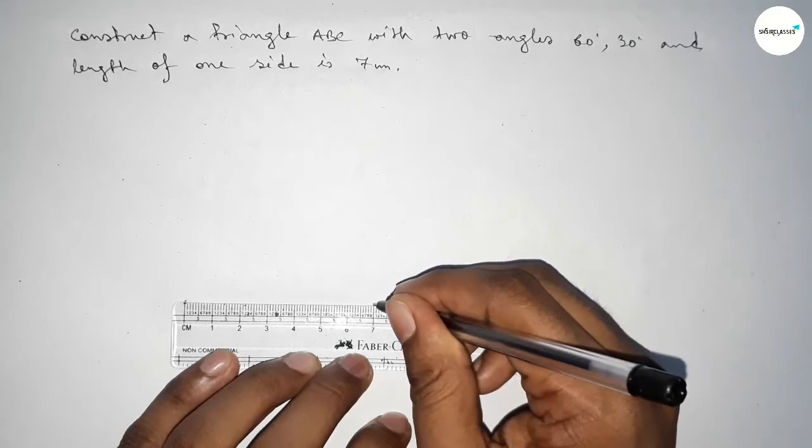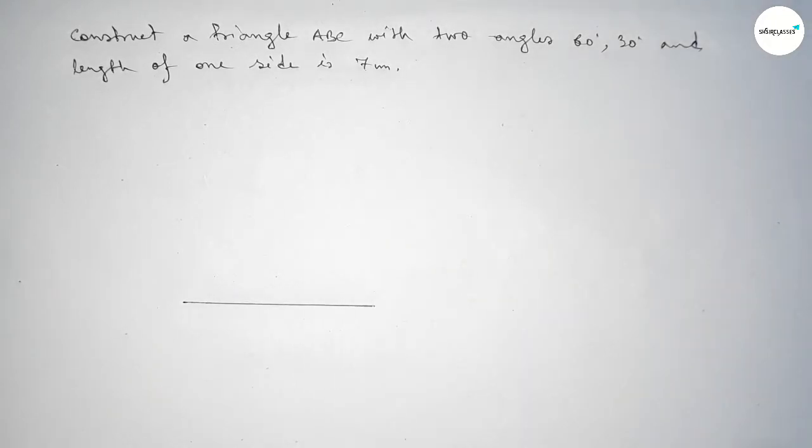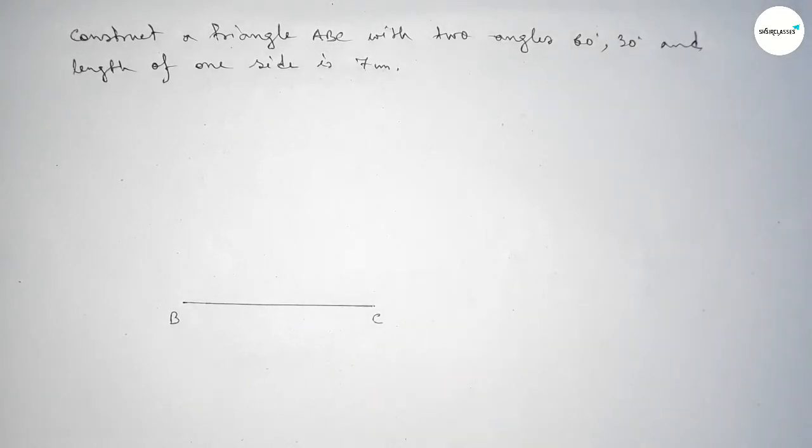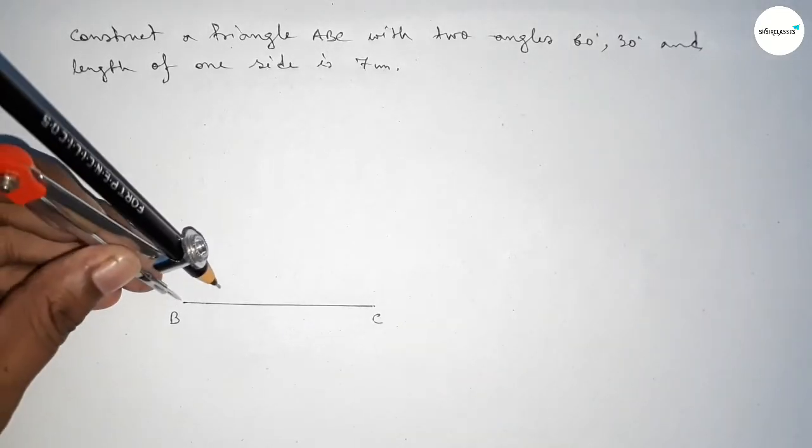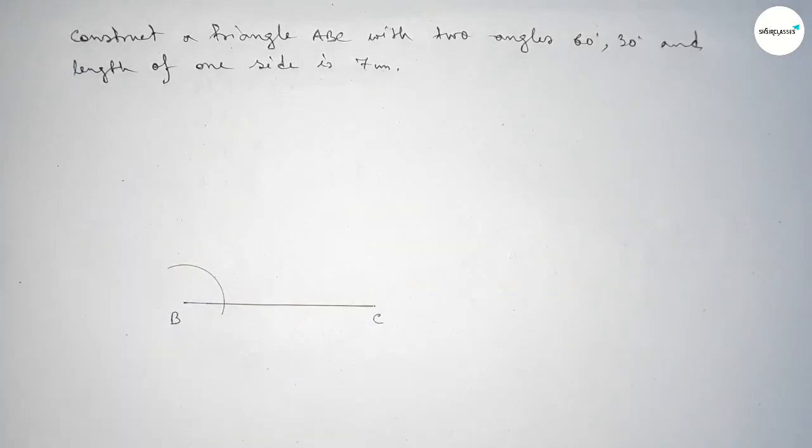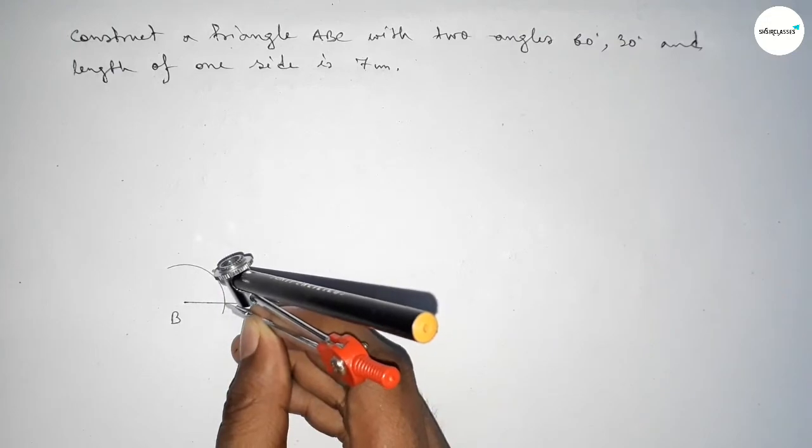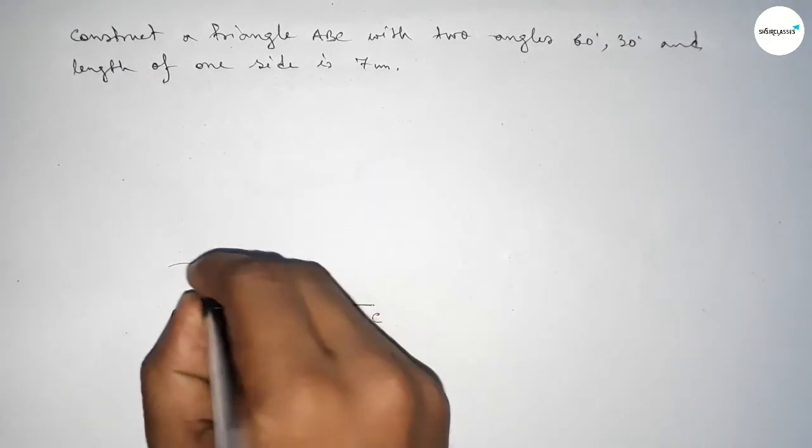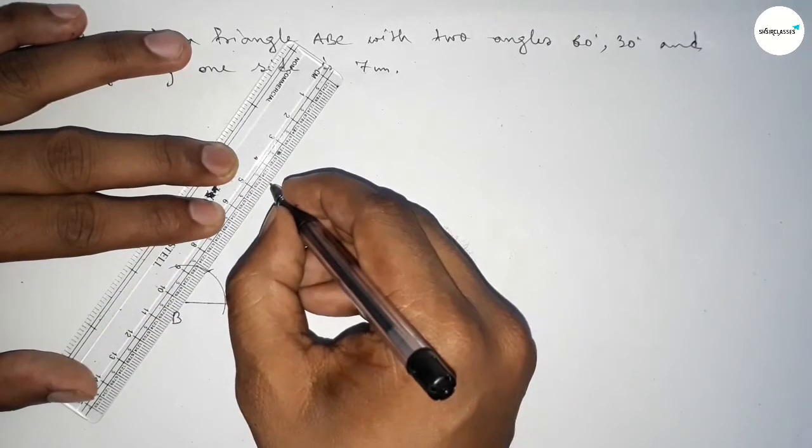Now drawing 60 degree angle on the point B. So putting the compass here and taking any length and drawing an arc by this way, and putting the compass here with same length and cut here. So both the curves intersect at a point. Now first joining this to get here a 60 degree.